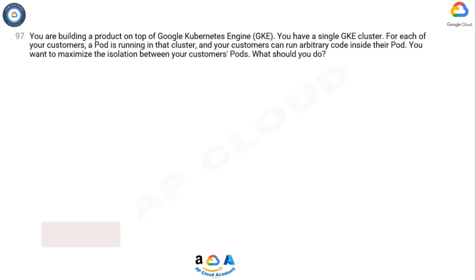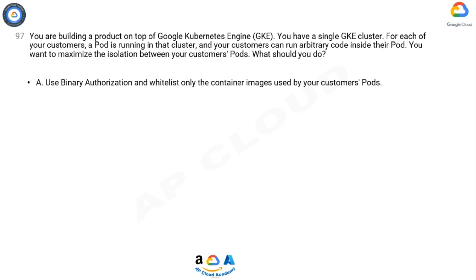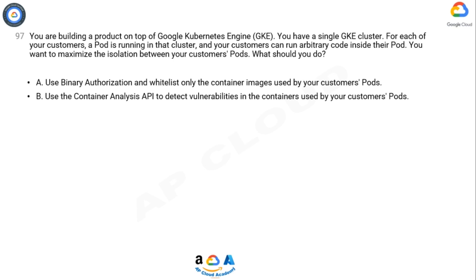You are building a product on top of Google Kubernetes Engine (GKE). You have a single GKE cluster for each of your customers. A pod is running in that cluster and your customers can run arbitrary code inside their pod. You want to maximize the isolation between your customers' pods. What should you do? Option A: Use binary authorization and whitelist only the container images used by your customers' pods. Option B: Use the Container Analysis API to detect vulnerabilities in the containers used by your customers' pods.